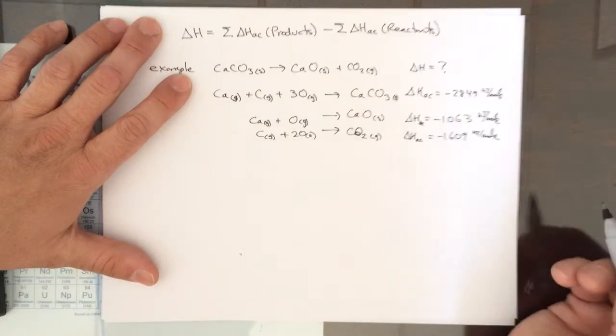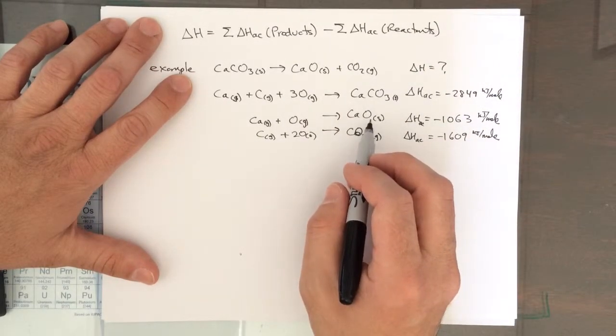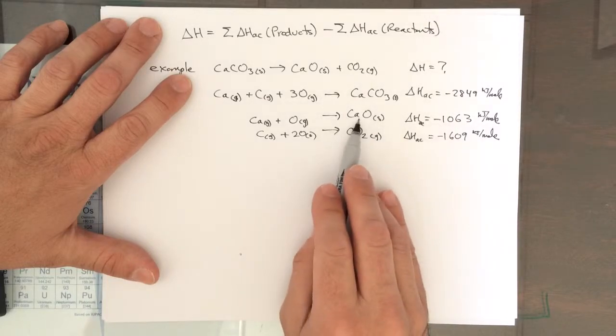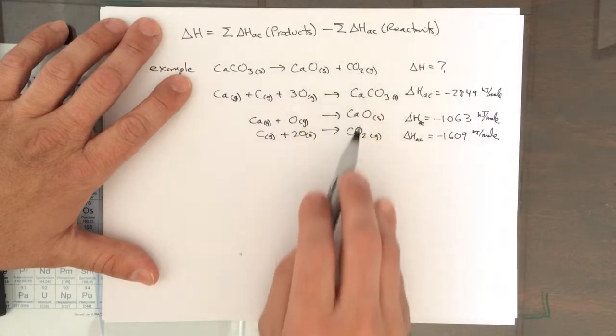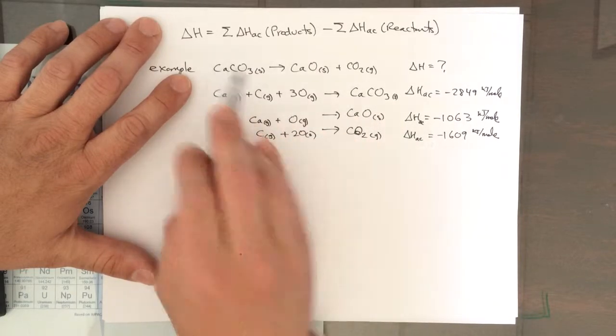Now if we were to do this using Hess's law, we know that we want all the reactants on the reactant side and the products on the product side. CaO is on the product side. That's good. CO2 is on the product side. That's good. Calcium carbonate is on the product side. We want that on the reactant side.